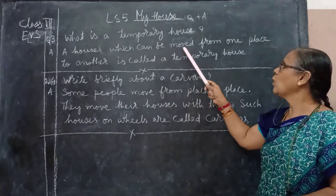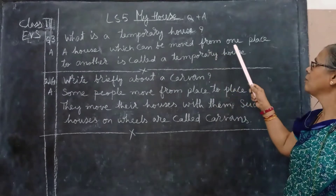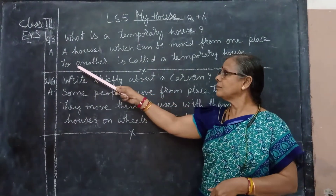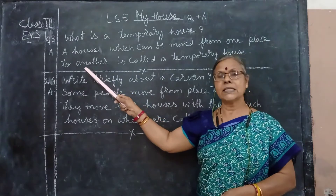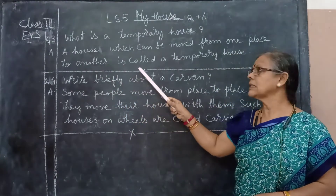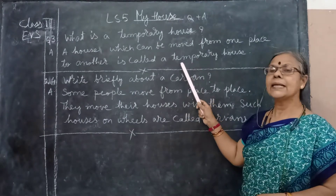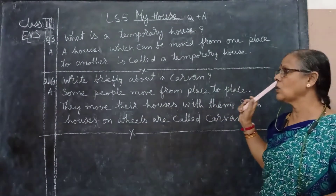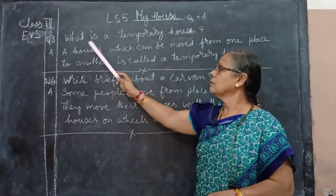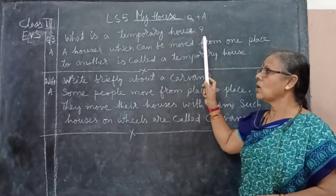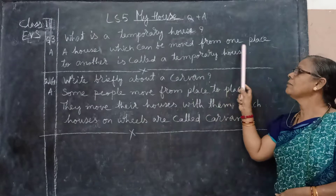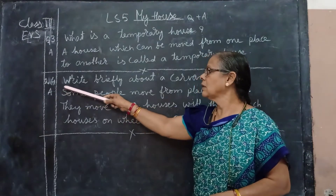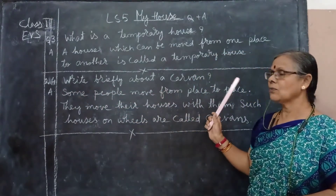W-H-I-C-H: which can. B-E M-O-V-E-D: moved. F-R-O-M: from. O-N-E: one P-L-A-C-E: place. T-O. A-N-O-T-H-E-R. I-S. C-A-L-L-E-D. T-E-M-P-O-R-A-R-Y: temporary. H-O-U-S-E: house. Once again we will repeat — what is a temporary house? A house which can be moved from one place to another is called a temporary house.